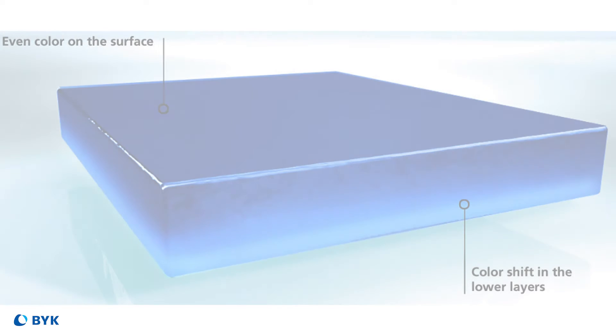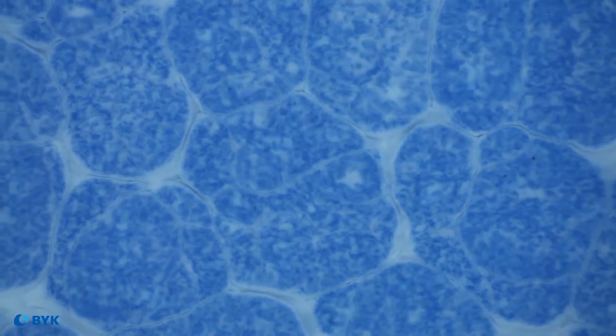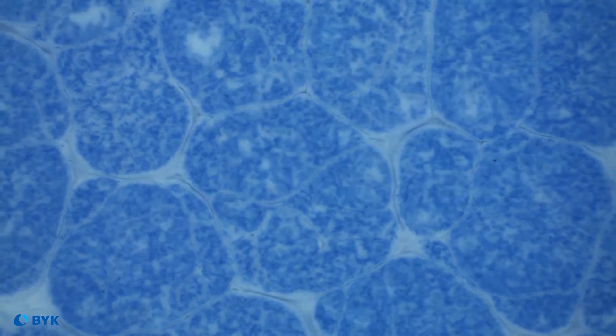Can you start by explaining what flooding and floating mean? We often hear these terms in combination rather than defining each individually. These concepts describe both horizontal and vertical separation of the pigments within the film. In some cases, the coating may appear uniform on the surface, but if you look at a cross section of the film, you would observe variation of color between the substrate and the surface. In other cases, you can visually see individual colors of pigments right on the surface.